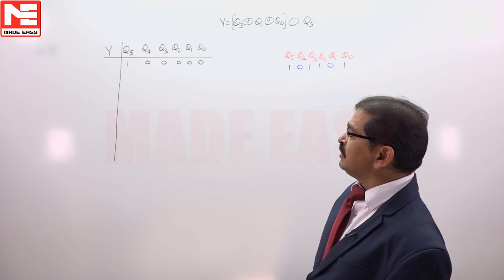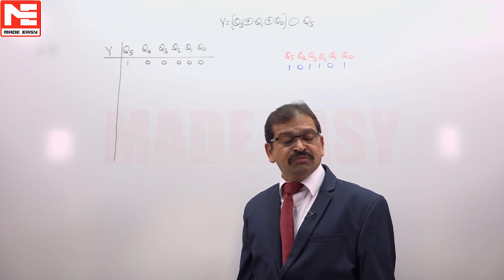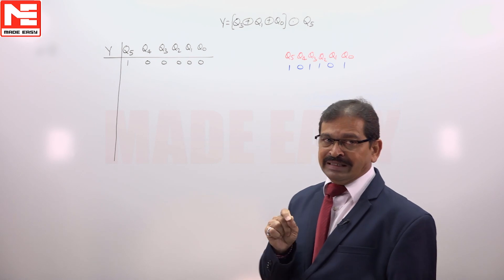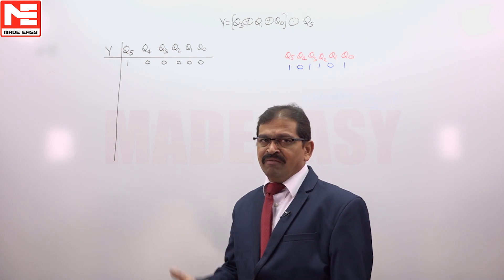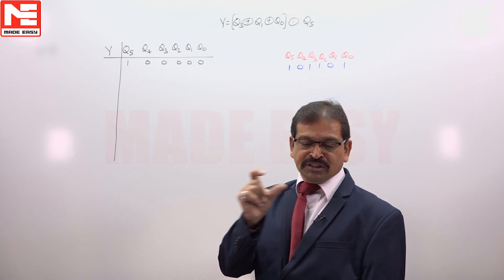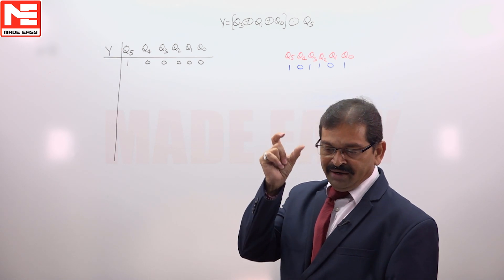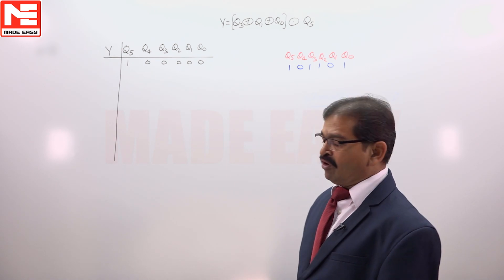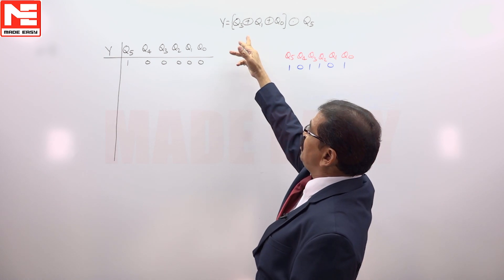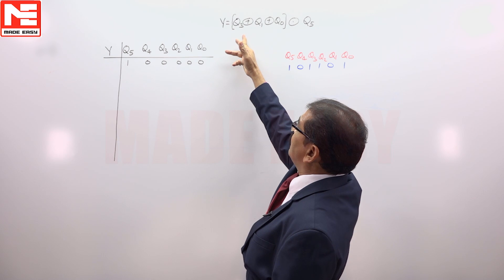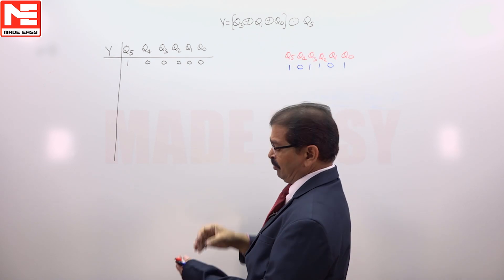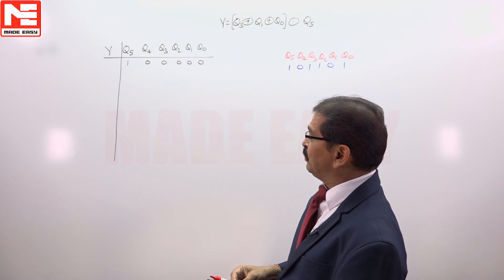For this 6-bit right shift register, we have the serial input as Y. Based on the connections with the exclusive OR gate and XNOR exclusive OR gates, Y is the exclusive OR between Q3, Q1, Q0 and XNOR with Q5. So Y is the serial input.